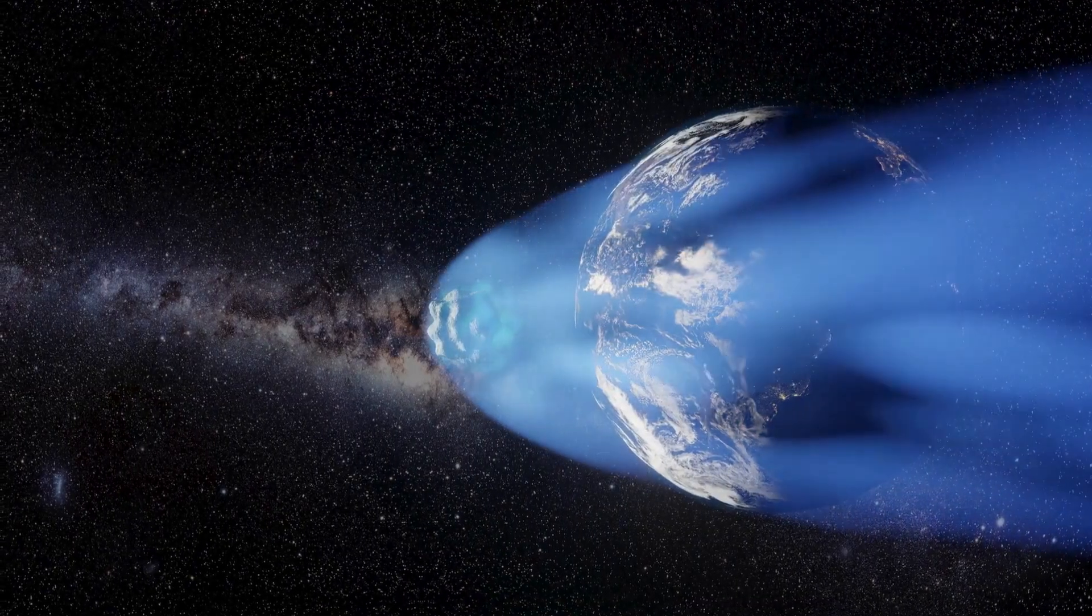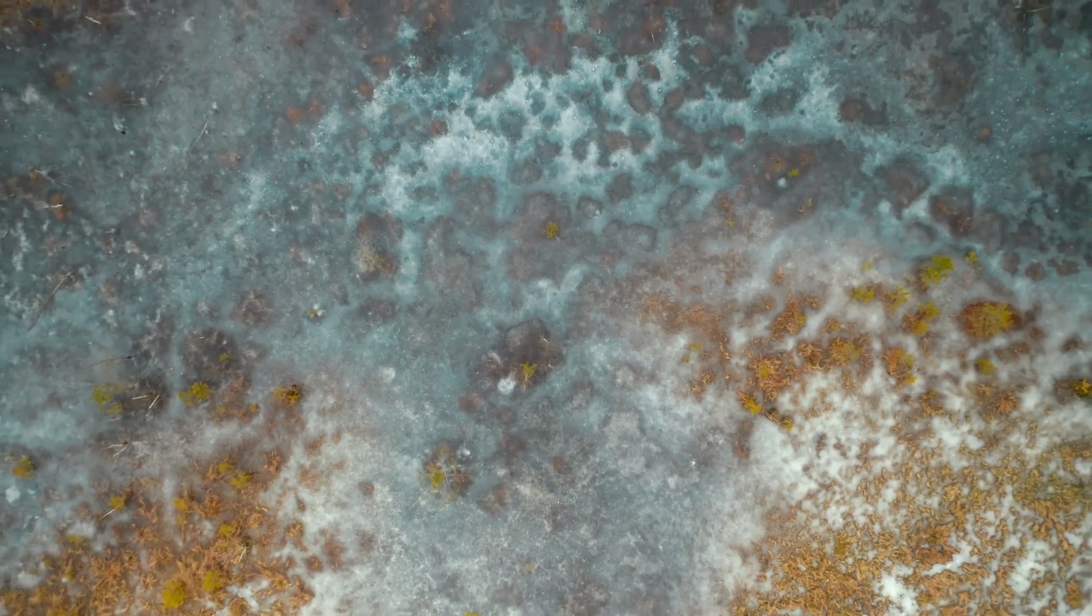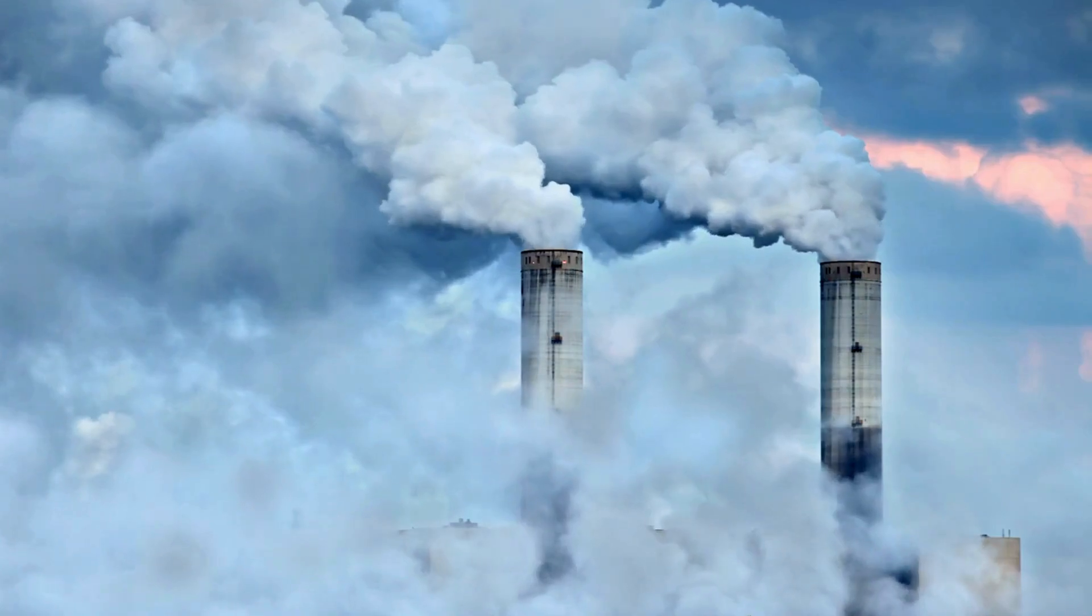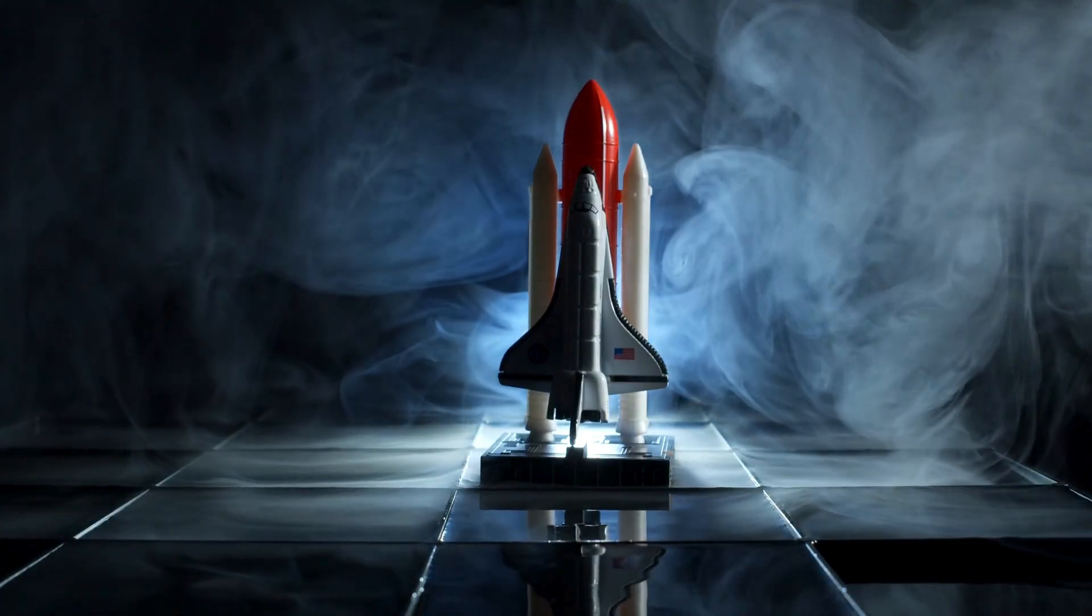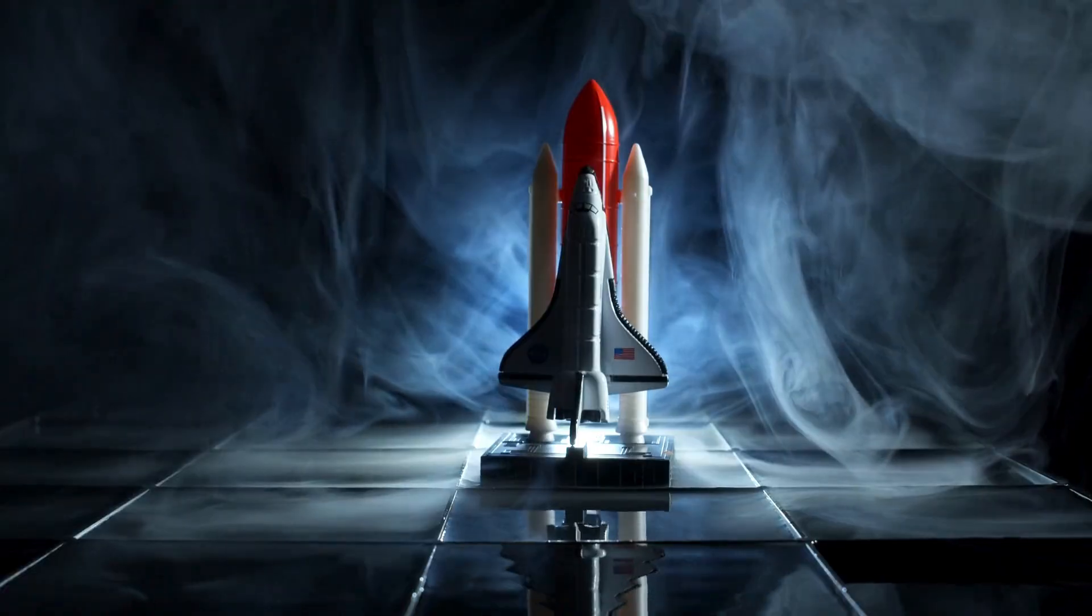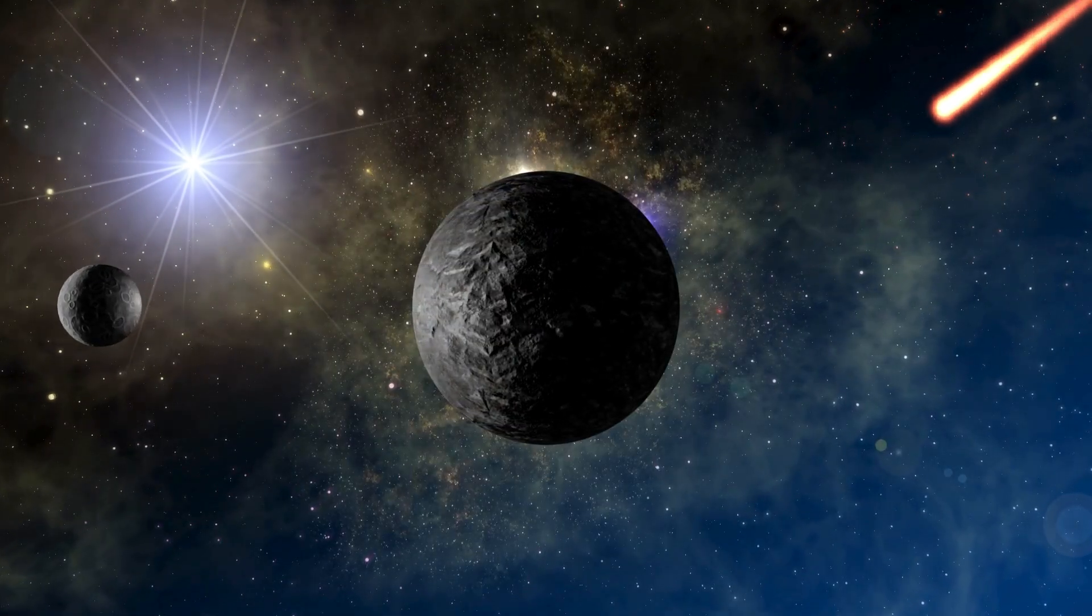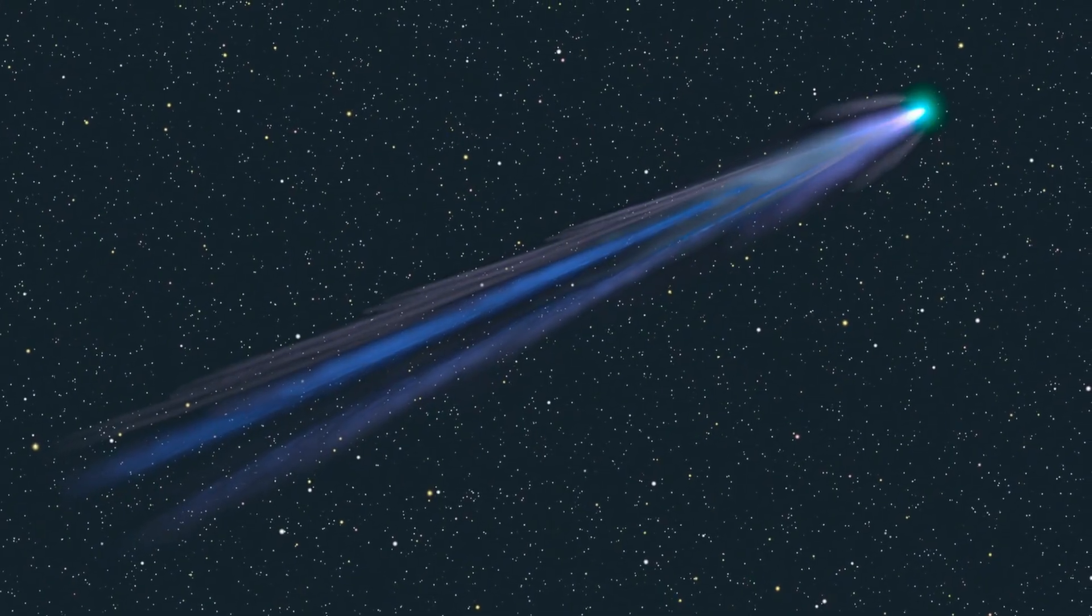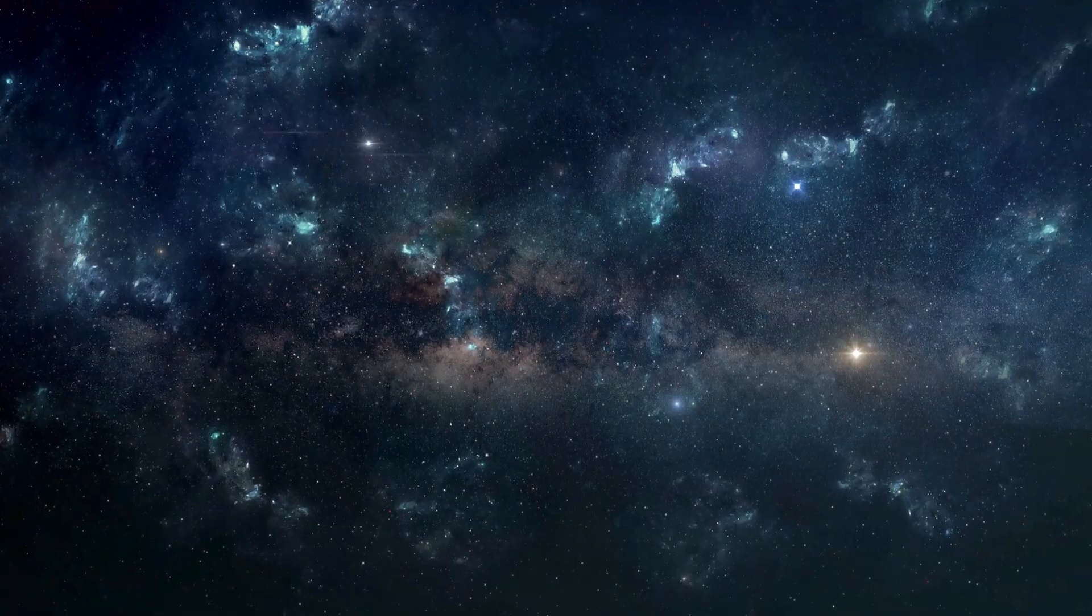Comets are nature's show-offs, powered by outgassing. As sunlight hits their frosty surfaces, trapped ices like water, carbon dioxide and methane sublimate straight into gas, erupting in jets that act like tiny rocket engines. These outbursts create a push, a non-gravitational nudge that tweaks the comet's orbit in ways we can measure precisely. It's like watching a sailboat tack against the wind, but in space.